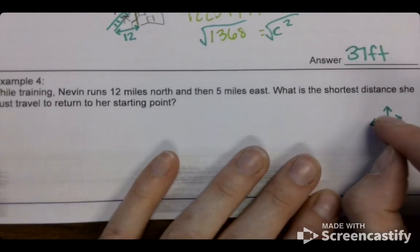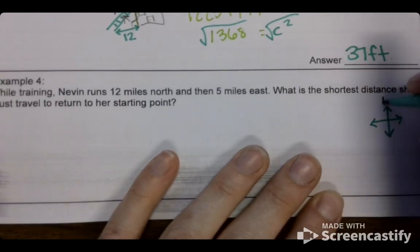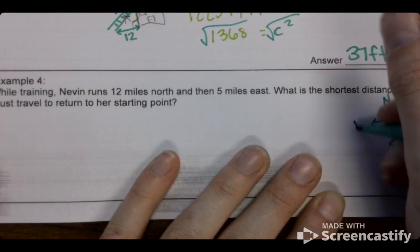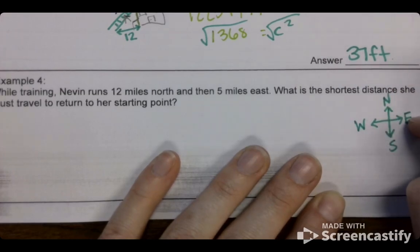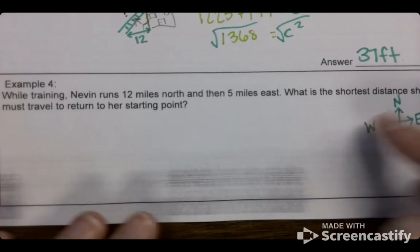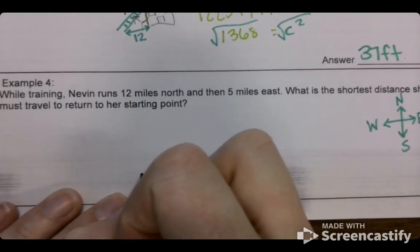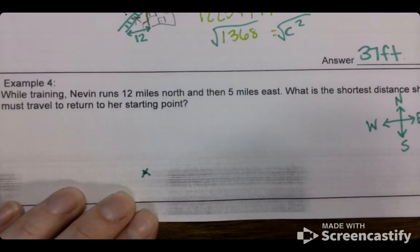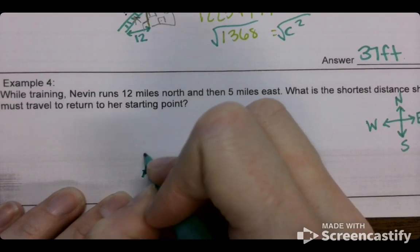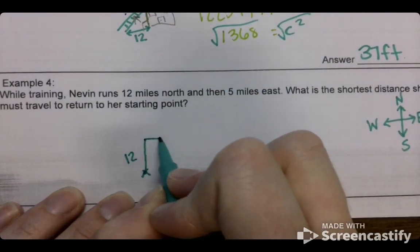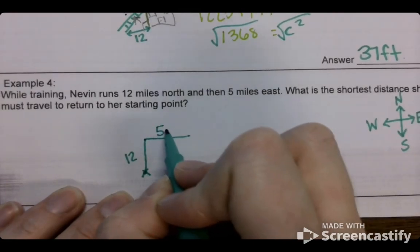Do you remember what goes up top here? North, east, south, west. Never eat soggy waffles. Never eat soggy waffles. So if we are Neville, right? We're starting here. We run north 12 miles. And then we run east 5 miles.